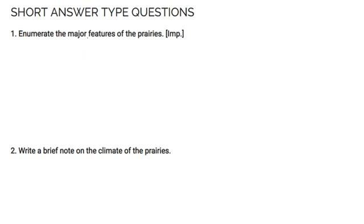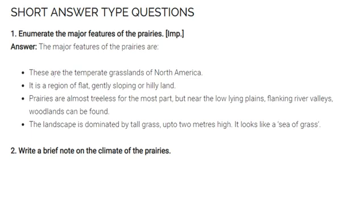Enumerate the major features of the prairies. First of all, these are temperate grasslands of North America. It is a region of flat, gently sloping or hilly land. Prairies are almost treeless for the most part, but near the low-lying plains flanking river valleys, woodlands can be found. The landscape is dominated by tall grass up to 2 meters high — it looks like a sea of grass.